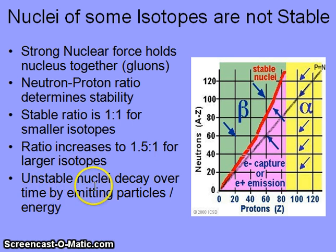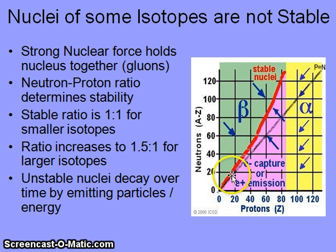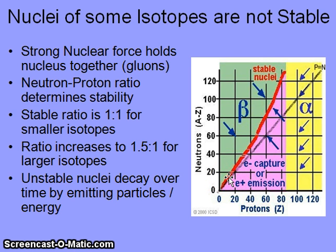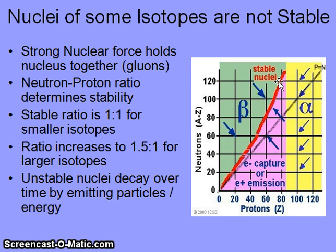Unstable nuclei will decay over time by emitting particles, and they may also emit energy. On this display we find the 1 to 1 ratio of protons to neutrons shown by this line. For small atoms, that 1 to 1 ratio produces stable atoms, like carbon-12. When we move to larger nuclei, the stability line deviates from the 1 to 1 ratio, giving greater numbers of neutrons which help cancel out the repulsive forces of the protons. We can also see regions on this chart where different types of radioactive decay occur.